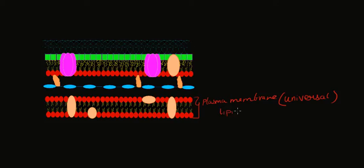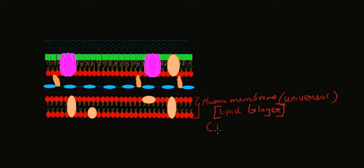The plasma membrane is a lipid bilayer, meaning there are two leaflets of lipids which make up the plasma membrane. Plasma membrane is made up of what is called phospholipids. They have phosphate heads and fatty acid tails, making up a phospholipid bilayer.